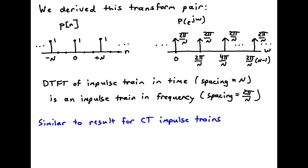This is the transform pair we derived: if we start with an impulse train in the frequency domain with spacing 2π/N, the inverse transform is an impulse train in the time domain with spacing N. This is analogous to the continuous-time result where an impulse train in one domain gives an impulse train in the other. We use this discrete-time impulse train to interpret frequency-domain sampling, which leads to the Discrete Fourier Transform (DFT) implemented by the Fast Fourier Transform (FFT) algorithm.